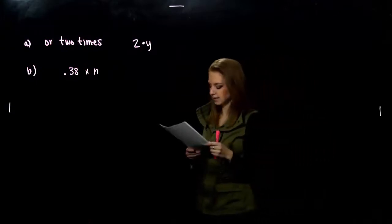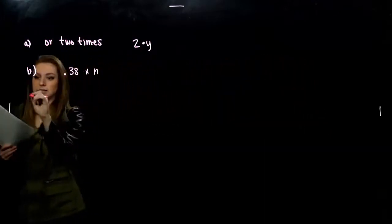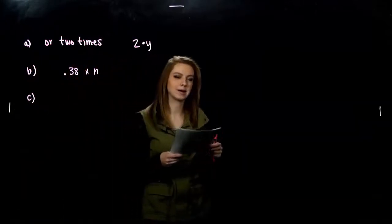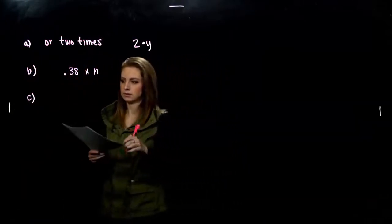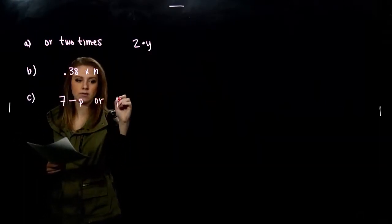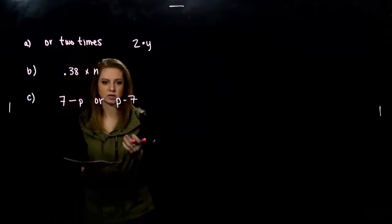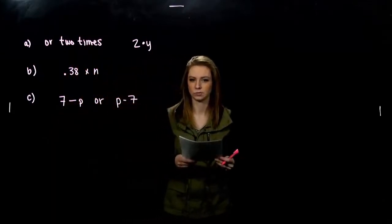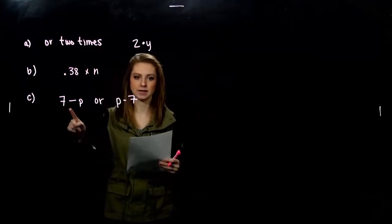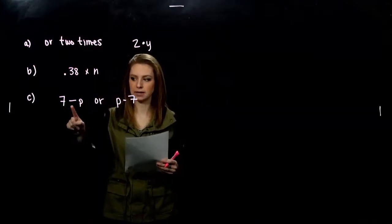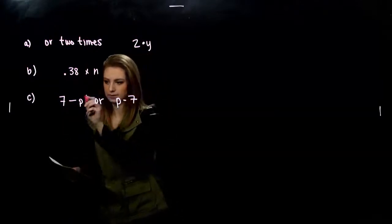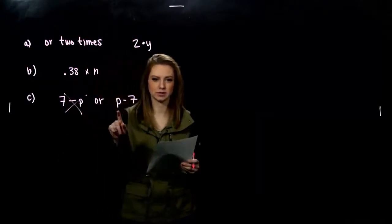And last, 7 less than some number. So what order am I going to write that in? 7 less than some number or 7 less than some number? So what do each of these mean? So 7 minus p is p less than 7. That's not what we were asked to find. That one's out.